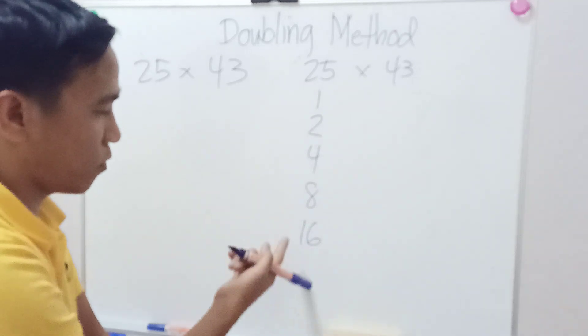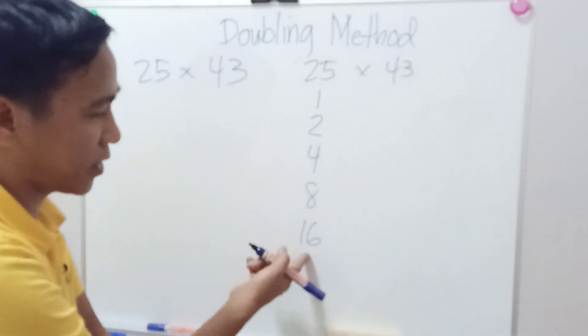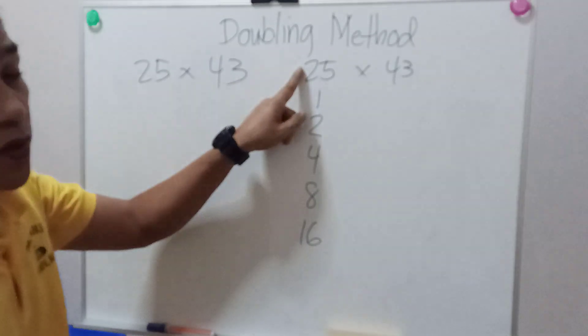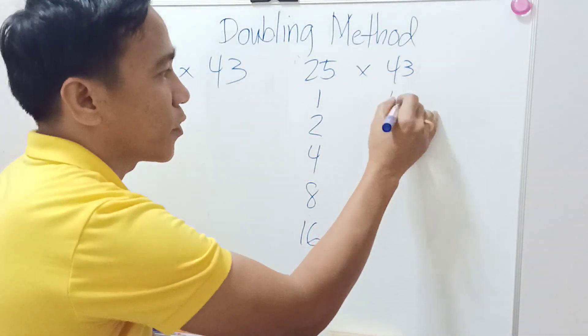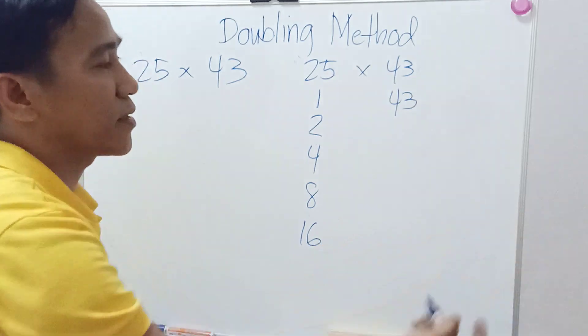If we keep on moving, double of 16 is 32, which is more than 25, so we have to stop. We start at 43 on the right hand side.